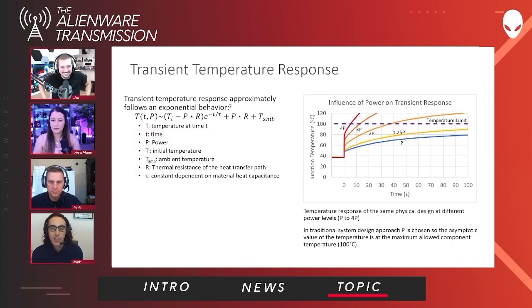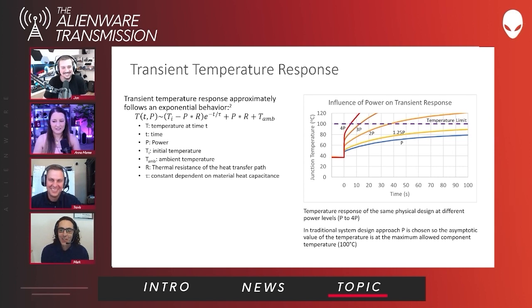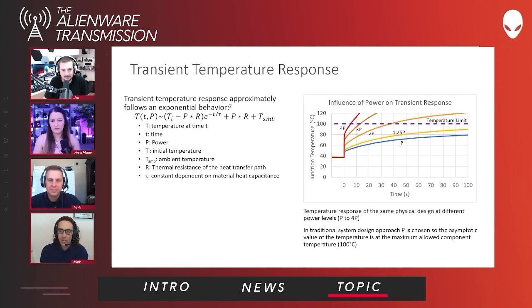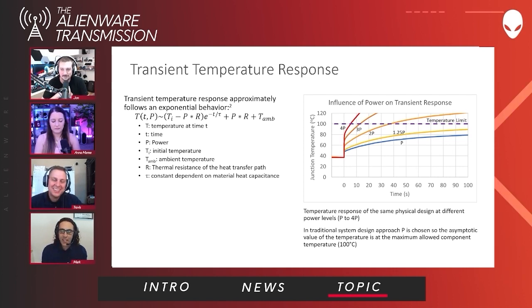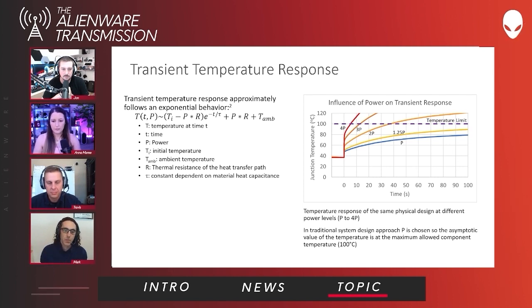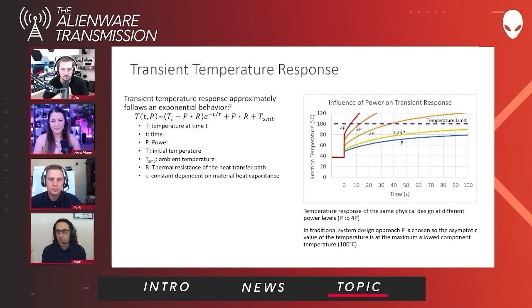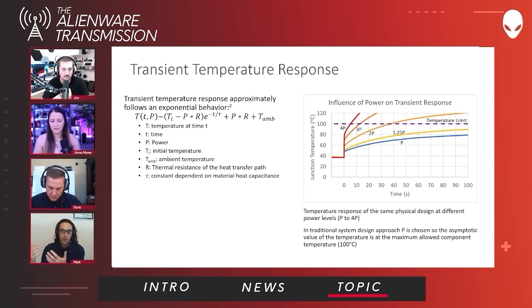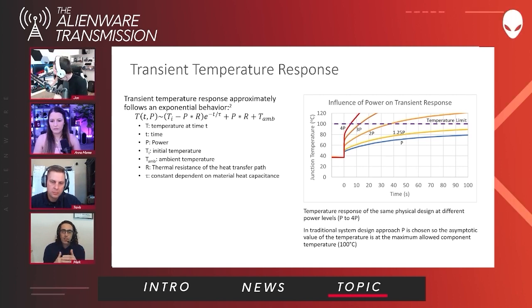This is the equation showing a simplification of the actual physics — basically a lumped capacitance model. What it says is that the temperature response has an exponential aspect to it, which you can see in the graph on the right showing temperature response for different power levels on the same system. The blue line — power P — is what we used to do traditionally, designing a system for 29 watts. If you turned on the system and started exercising the CPU, it would literally take tens of minutes before you'd saturate at that final temperature of 100°C.